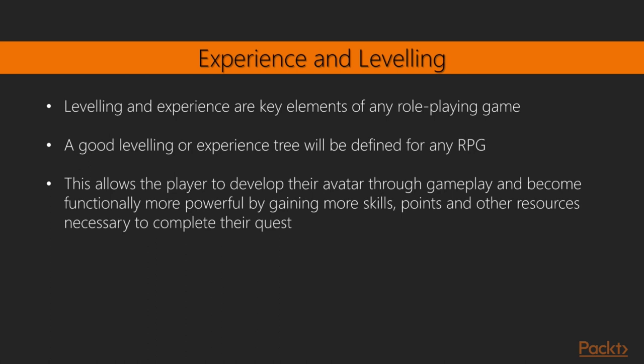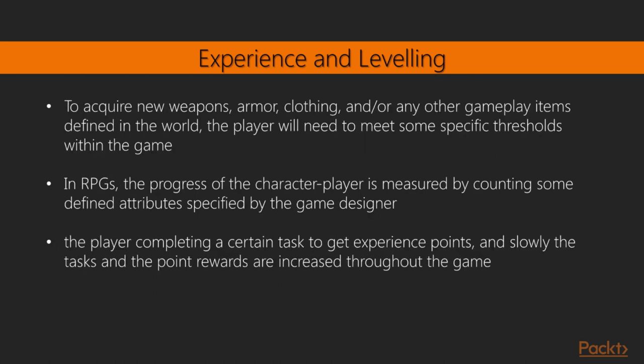In RPGs, the progress of the character player is measured by counting some defined attributes specified by the game designer. Usually, advancements are defined by the player completing a certain task to get experience points, and slowly the tasks and point rewards are increased throughout the game. Some common ways to acquire points are by killing enemies, combating non-player characters, and performing quests defined within the game.